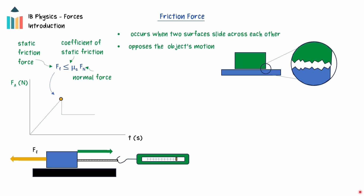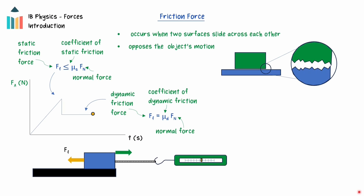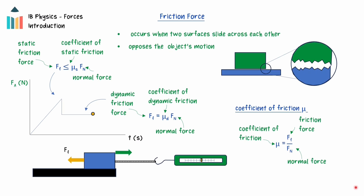The static friction force will equal the applied force until it reaches a maximum value. The formula for the force of static friction is that the force of static friction is equal to the coefficient of static friction times the normal force. Once the applied force becomes larger than the maximum static friction force for the two surfaces, the object will begin to move, and the friction force will decrease as it becomes the dynamic force of friction. The dynamic force of friction is always lower than the static force of friction and equals the coefficient of dynamic friction times the normal force. The coefficient of friction is the dimensionless ratio of the friction force to the normal force and is dependent on the surfaces interacting. A high coefficient will result in higher forces of friction between the surfaces. Each combination of surfaces will have its own coefficients of static and dynamic friction, where the dynamic coefficient is always smaller than the static coefficient.